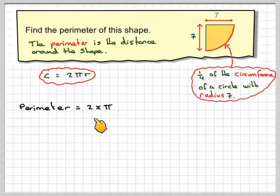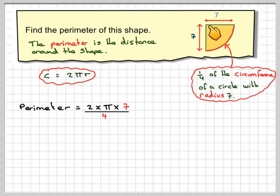So the perimeter is going to be 2 × π × 7, and we have to divide that by four because we've only got a quarter of the circumference. And then don't forget this is also part of the perimeter, so we're going to have to add seven. And this is also part of the perimeter, so we're going to have to add seven.